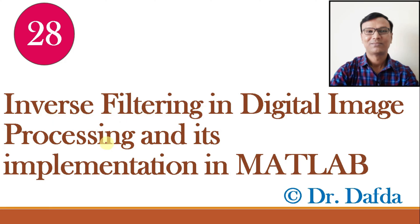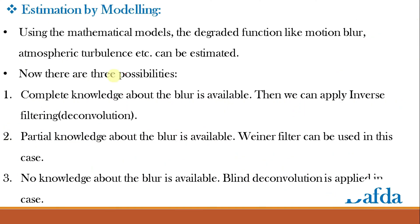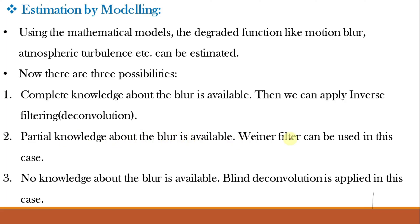Starting with the slide from our previous video class: estimation by modeling can be done with three different possibilities. First, if we have complete knowledge about the blur, we can apply deconvolution or inverse filtering. Second, if noise is also present and we have only partial knowledge about the blur, we can use the Wiener filter. Third, if we have no knowledge about the blur and noise, we can use blind deconvolution.